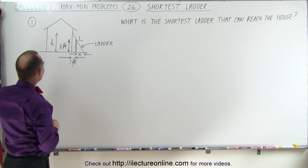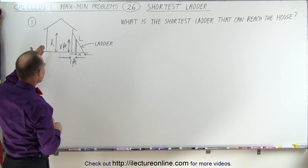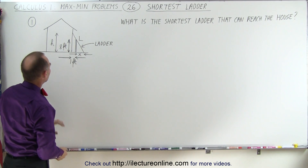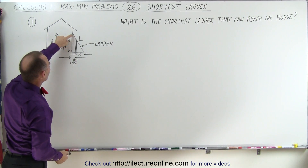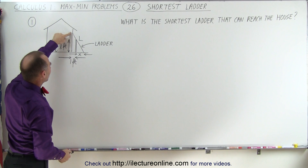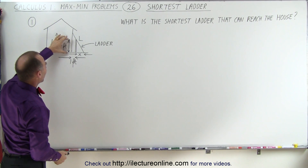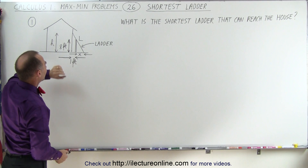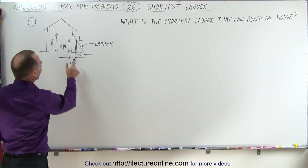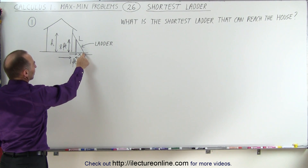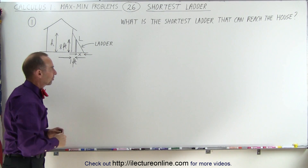We have a nice drawing, and we can see that we're simply trying to find the shortest L possible. Notice that the height where the ladder touches the house is equal to h. The height of the wall is eight feet. The distance from the wall to the house is one foot. And let's call the distance from where the ladder touches the ground to the wall x.